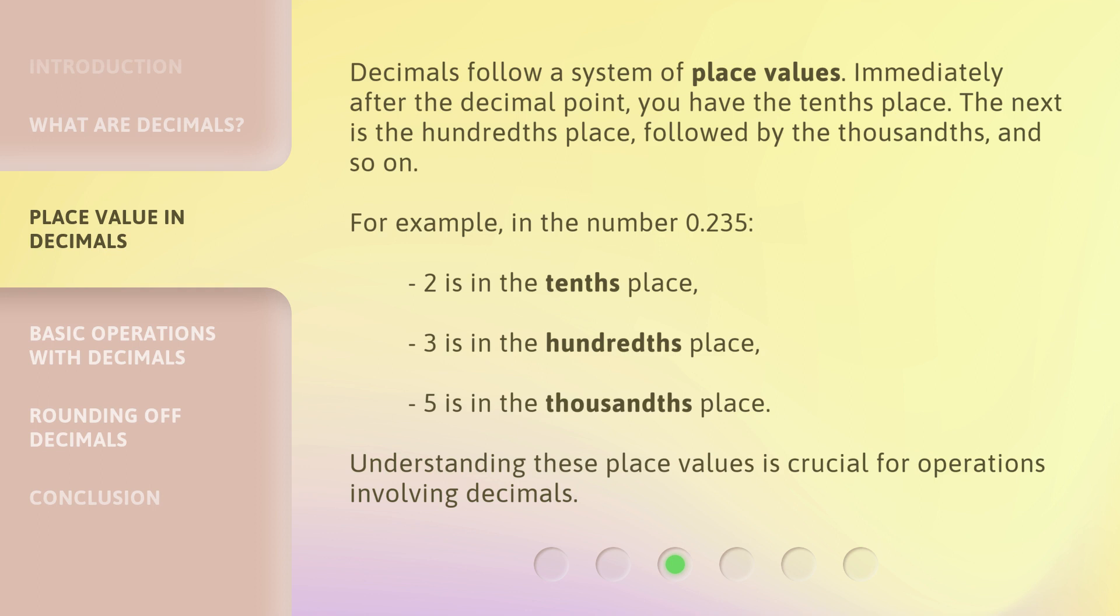For example, in the number 0.235, 2 is in the tenths place, 3 is in the hundredths place, 5 is in the thousandths place. Understanding these place values is crucial for operations involving decimals.